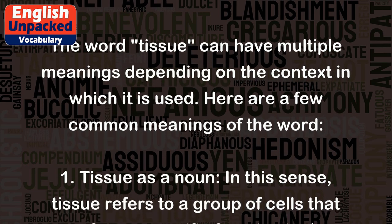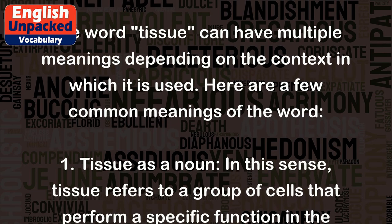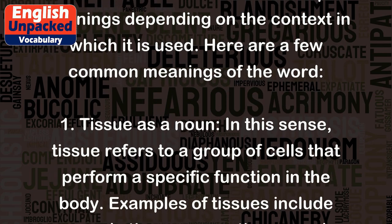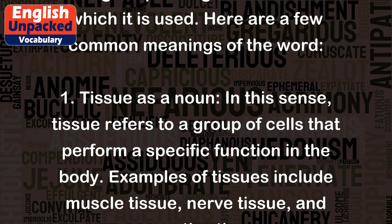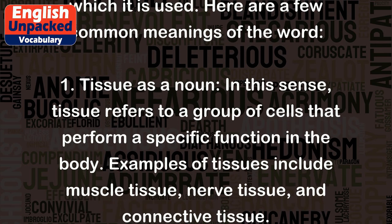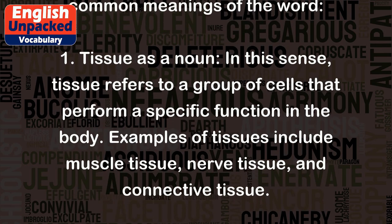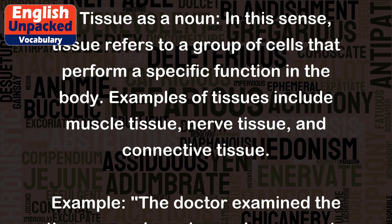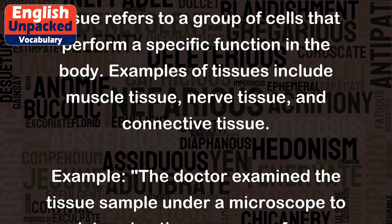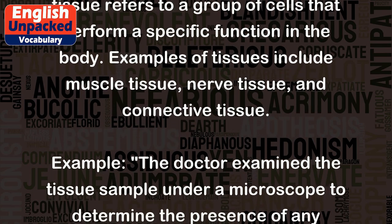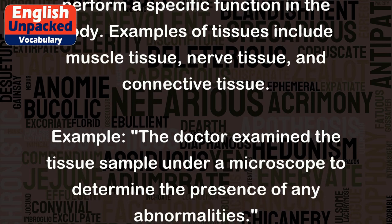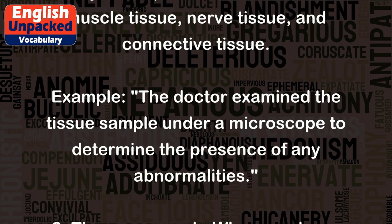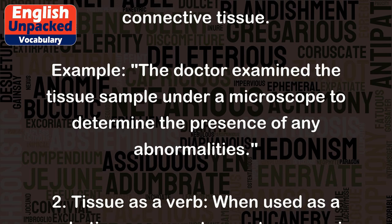1. Tissue as a noun. In this sense, tissue refers to a group of cells that perform a specific function in the body. Examples of tissues include muscle tissue, nerve tissue, and connective tissue. Example: the doctor examined the tissue sample under a microscope to determine the presence of any abnormalities.